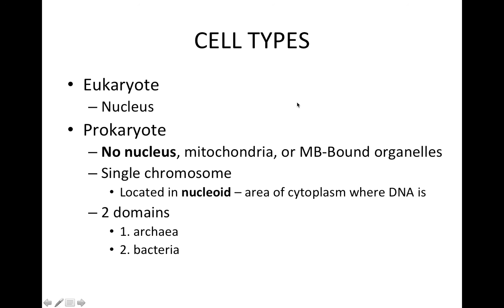A quick overview of the different cell types. We've got eukaryotes and prokaryotes. If you break the word up, you have 'karyo' or kernel, which is for nucleus, and 'eu' for true — so true nucleus. Eukaryotes have a nucleus; prokaryotes have no nucleus. They have no mitochondria, no membrane-bound organelles, and only a single chromosome. The chromosome is located in a nucleoid — the area of the cytoplasm designated for DNA. We can break prokaryotes into two domains: archaea and bacteria. Bacteria are prokaryotes, have a nucleoid, and have no nucleus.